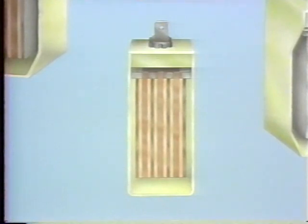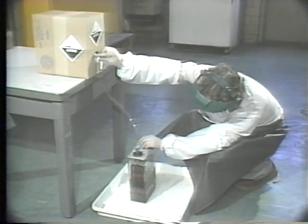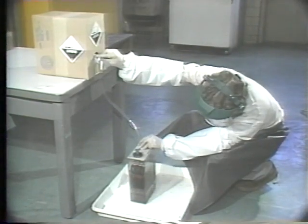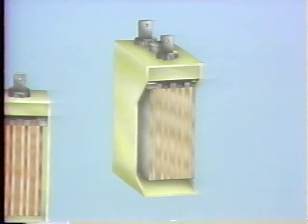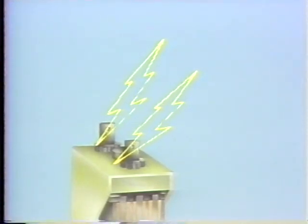Dry charged cells also have activated positive and negative plates, but to improve their shelf life, they're not filled with electrolyte. To put a dry charged battery into service, it first has to be filled and then given a freshening charge just like a wet charged battery. New cells may also be received in the dry uncharged condition — these cells have lead oxide plates that haven't been activated yet and aren't filled with electrolyte. Before a dry uncharged cell is installed, it has to be filled and then given an initial charge according to the manufacturer's recommendations.